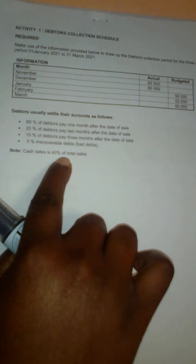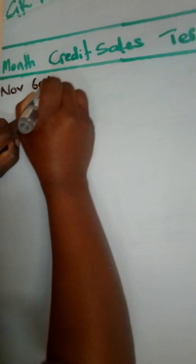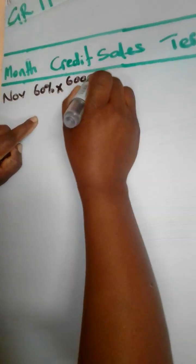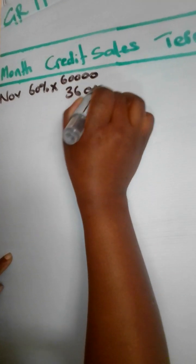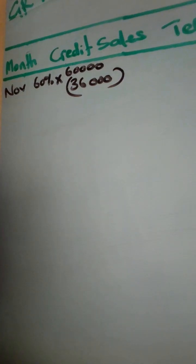Starting with November: total sales are 60,000. Since 40 percent is cash, 60 percent is credit. So credit sales = 60% × 60,000 = 36,000. The terms of credit state: 60 percent of debtors pay one month after the date of sale, 20 percent two months after, 15 percent three months after, and 5 percent is irrecoverable — bad debts.